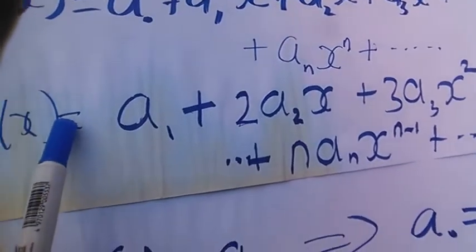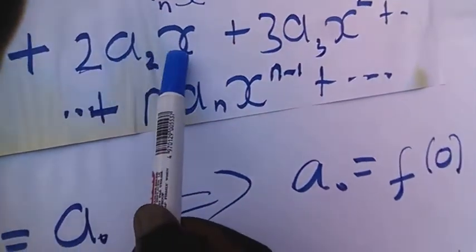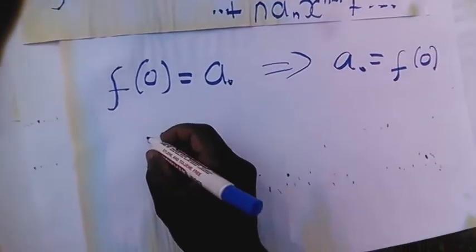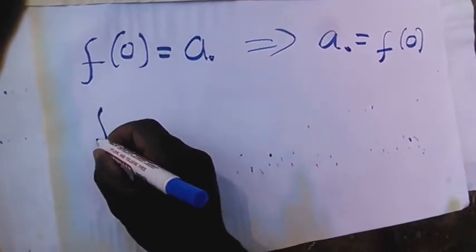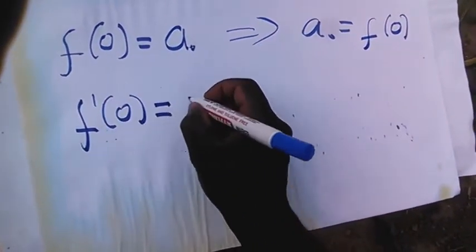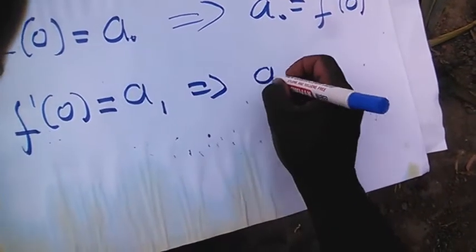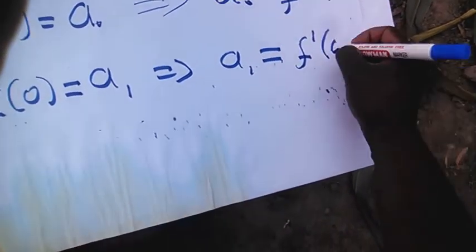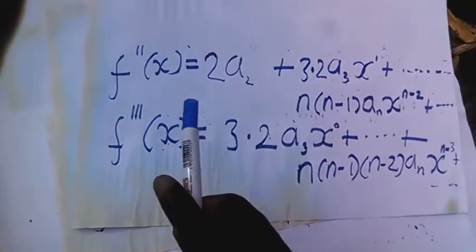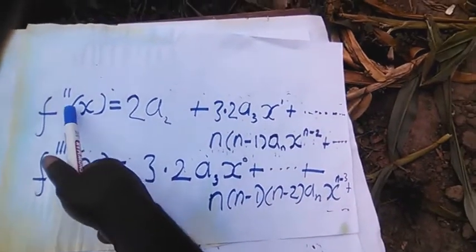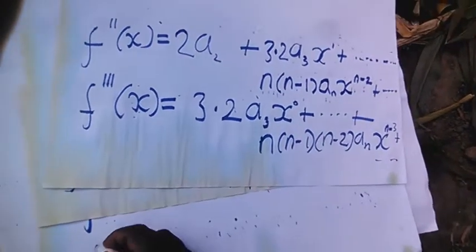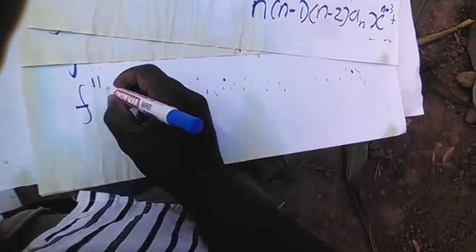If we do the same to the first derivative function, putting x equal to 0 in all terms, we shall have f prime of 0 equals to A1, which means A1 is the same as f prime of 0. For the second derivative, substituting x equals 0, we shall have f double prime of 0.